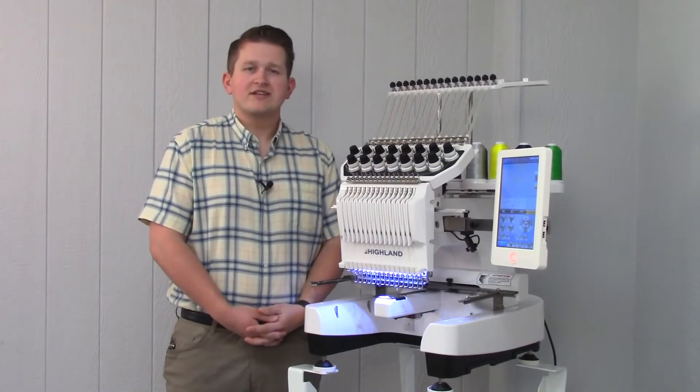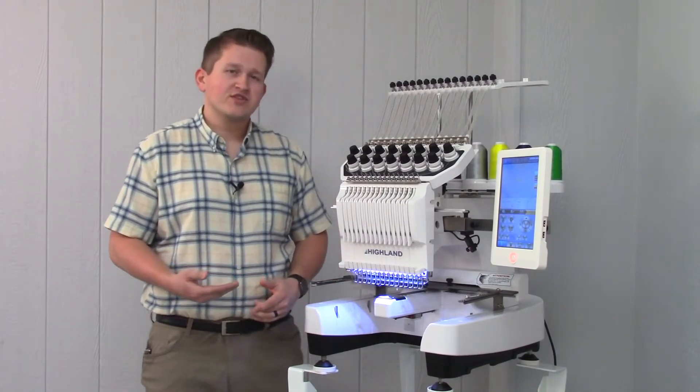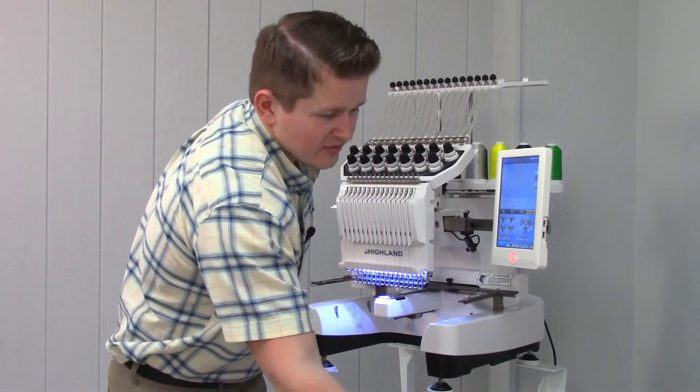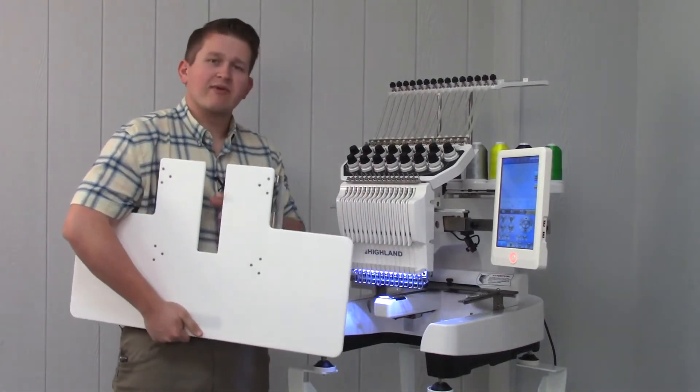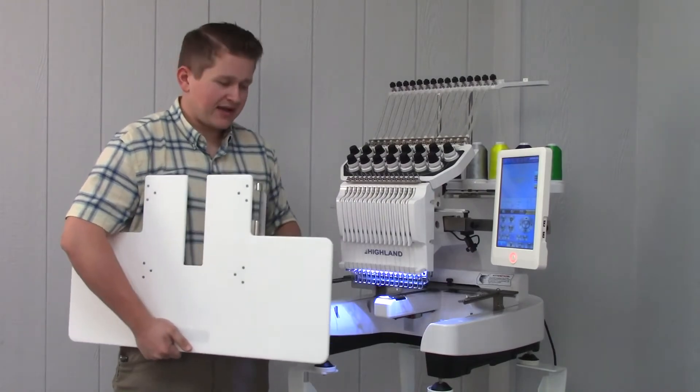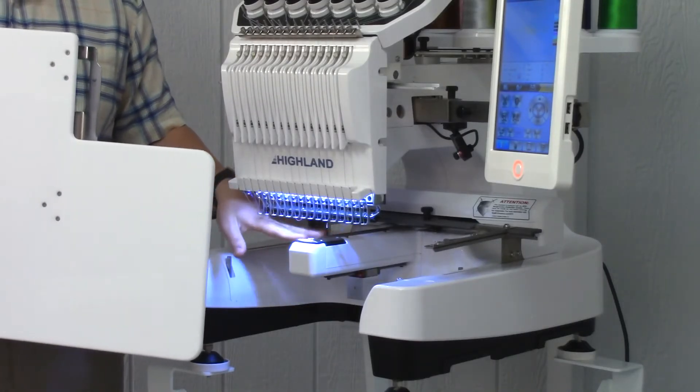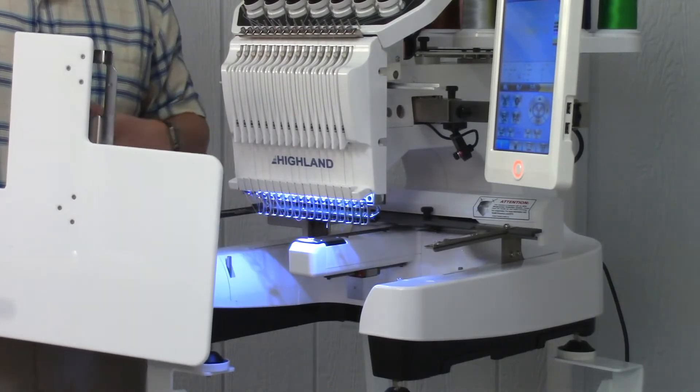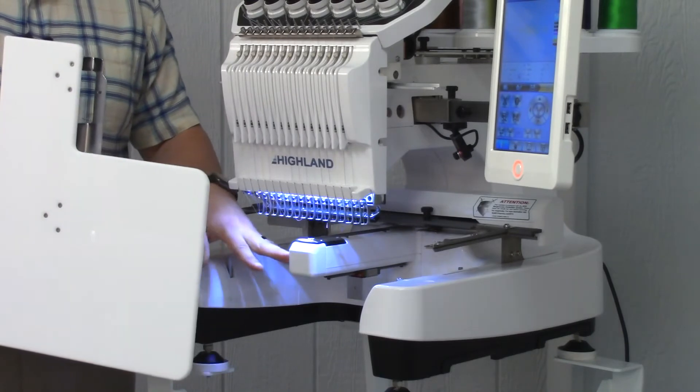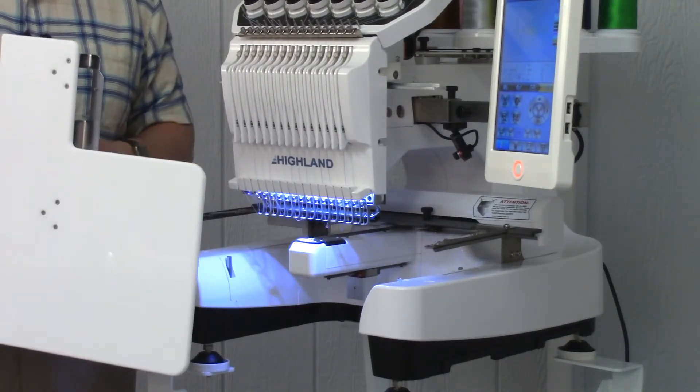Now that we have our table brackets installed, we're ready to bring our table over to our machine to mount it on there. I need to point out that the table has a rectangular cutout for your bed arm. Your bed arm is this lower rail on your machine that has the bobbin and rotary hook attached to the end. As you're sliding your table on, please be sure to not run the table into the bed arm as this can cause damage to your machine.